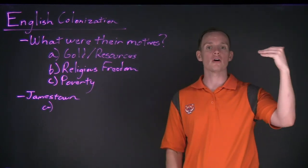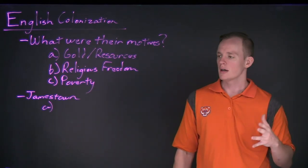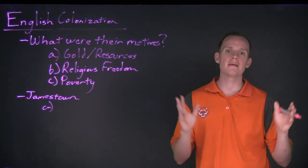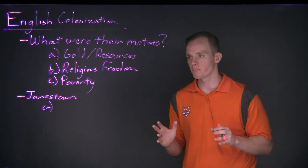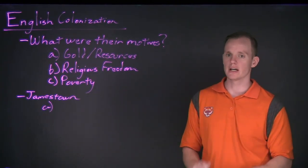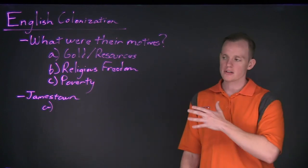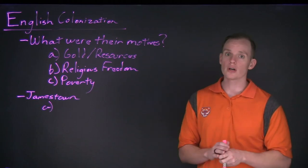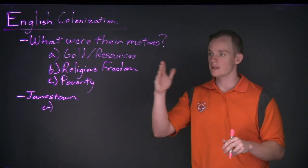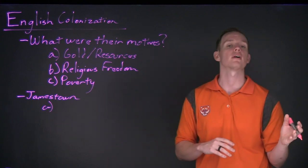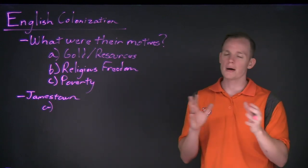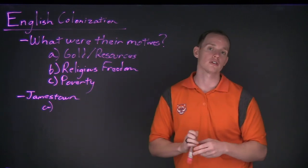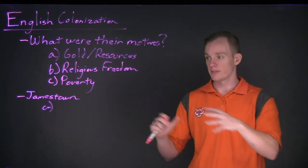The mortality rate continued to remain over 50 percent — even 80 percent of the initial Jamestown colonists who arrived in 1607 were dead by 1610. As it became clear there was no gold in Virginia, and as an ongoing war with the local Powhatan Confederation persisted, the Virginia Company had to develop a different method to ensure the colony's survival.